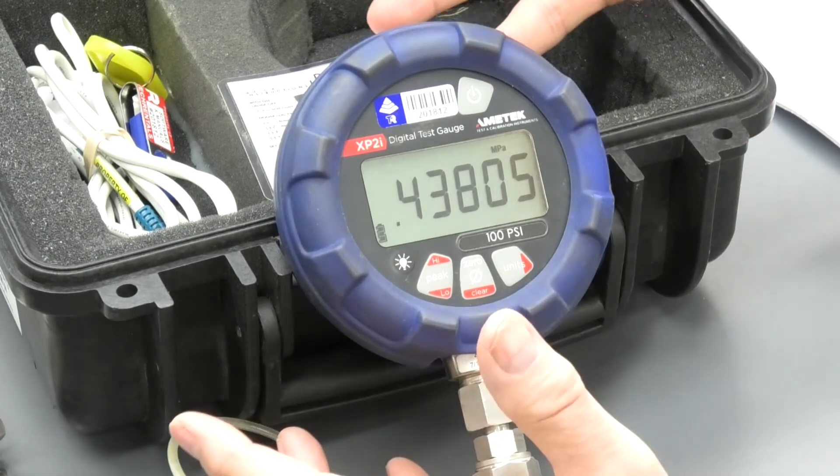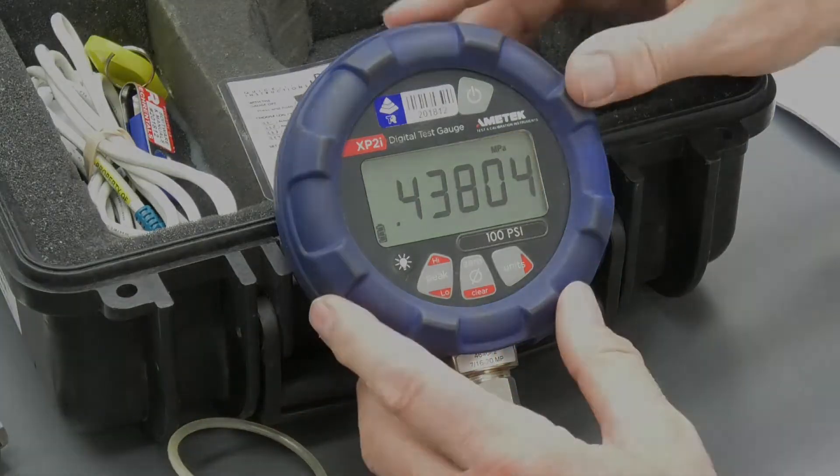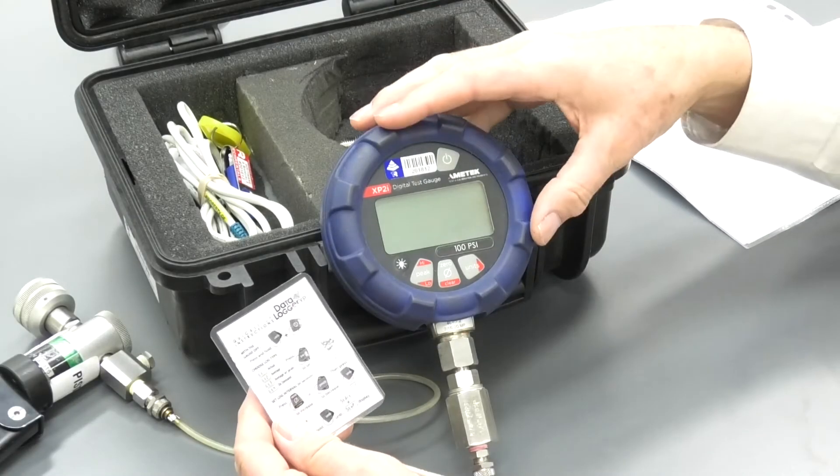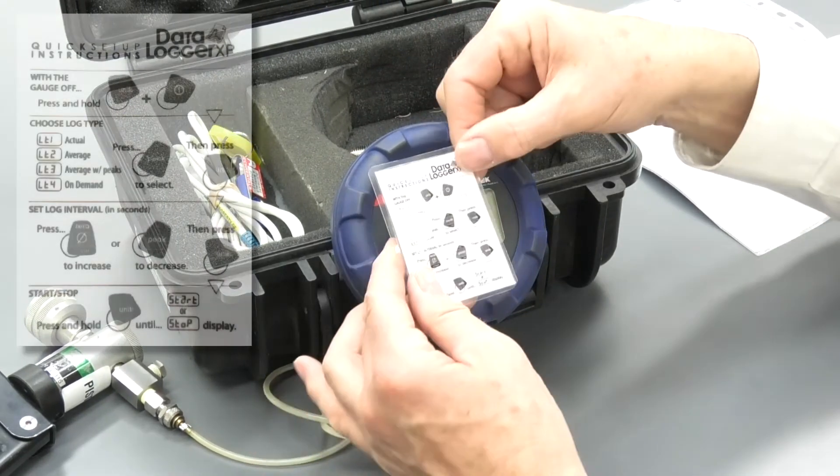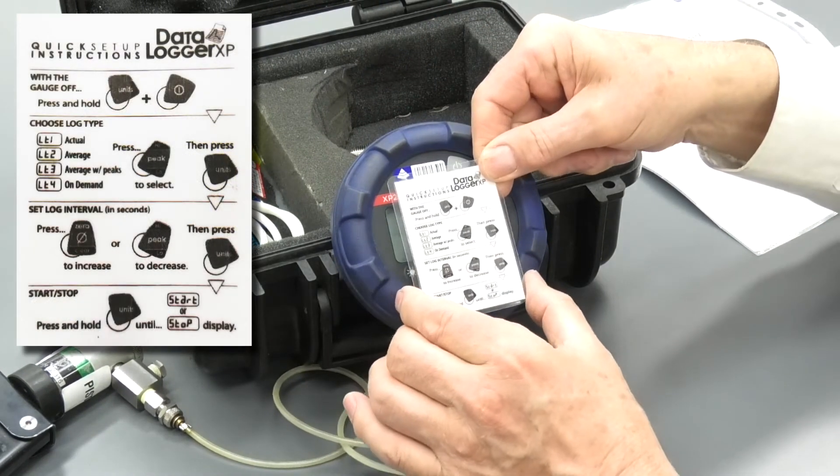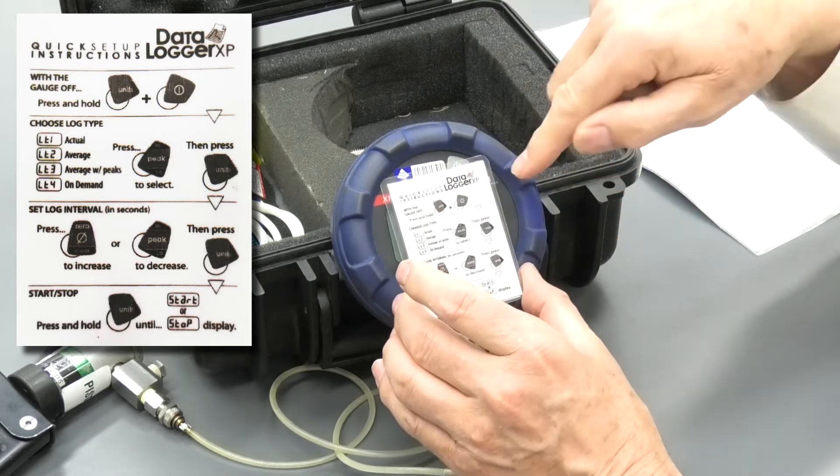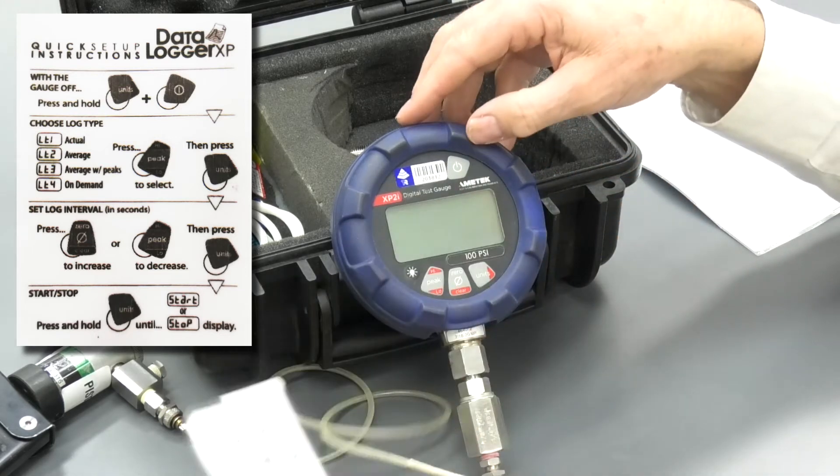Now, that's operating it as a straight gauge. Right, if we want to operate the XP2i in logging mode, there's this little cheat sheet. And the cheat sheet will give you various key combinations you need to hit. So I'll just go through that.